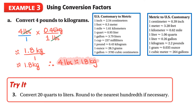Here is your third try question. We want to convert 20 quarts to liters, rounding to the nearest hundredth - two decimal places. Use conversion factors and the example above to help you solve this question.